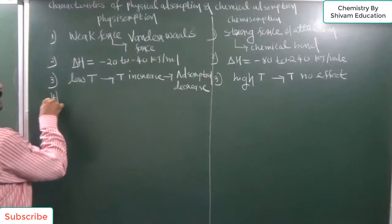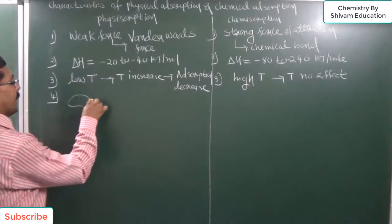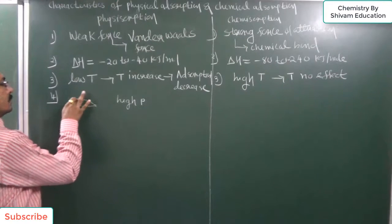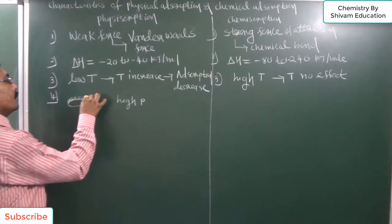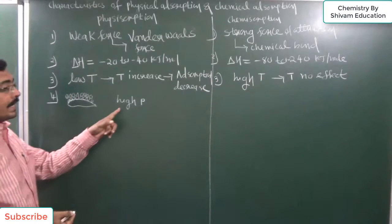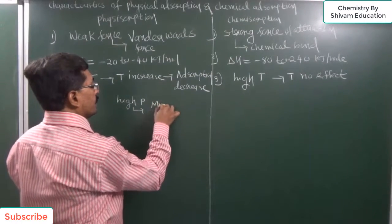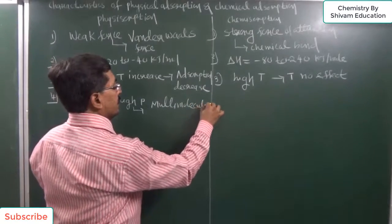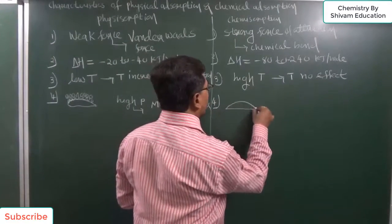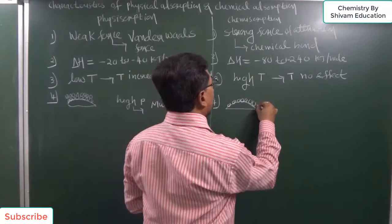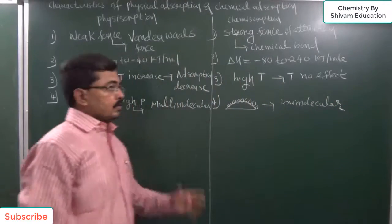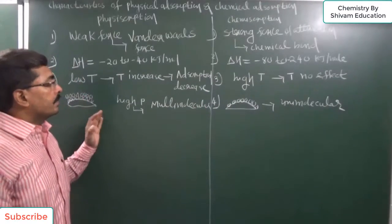Physical adsorption generally occurs at high pressure. On the surface of the adsorbent, more than one molecule can adsorb at the same place, so at high pressure multi-molecular layer formation occurs. While in chemical adsorption, at one place only one molecule can adsorb, so it is unimolecular layer formation.